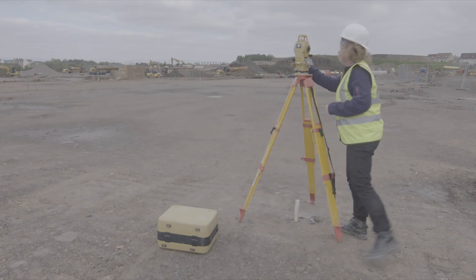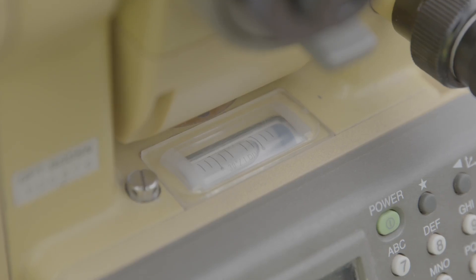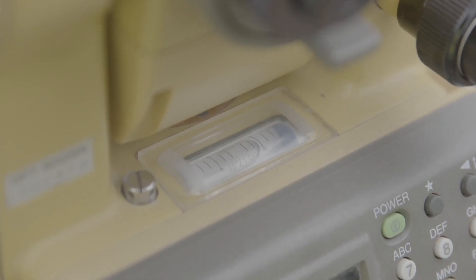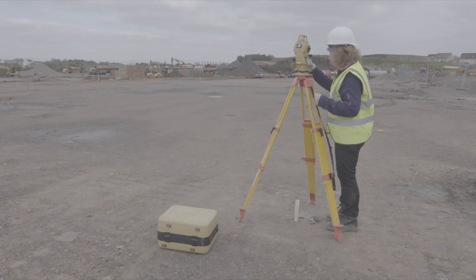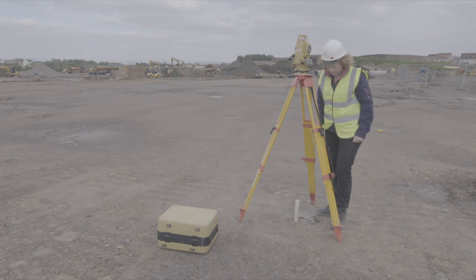So finally you're going to come back to the starting position. Check that the bubble is still central, which it is. And do a final check through the optical plummet that it hasn't moved off the nail and that's how to centre and level the total station over a nail.